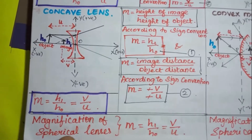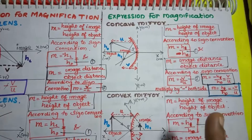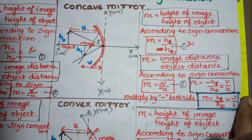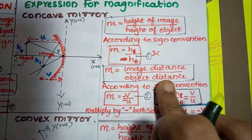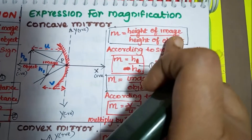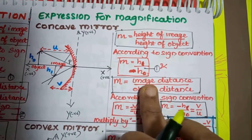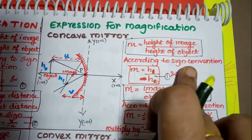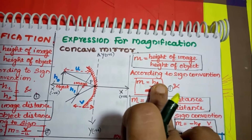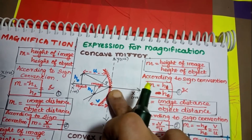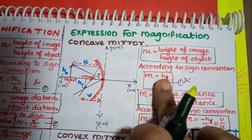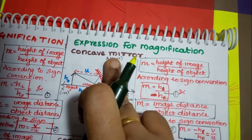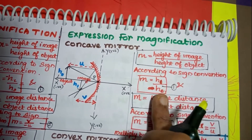Now let's look at the expression for magnification of a concave mirror. This is the ray diagram for magnification of a concave mirror. We have both formulas: magnification equals height of image over height of object, and also image distance over object distance. According to the new Cartesian sign convention, the height of the image lies on the negative side of the y-axis, so M = −H1 / H0. The height of the object lies on the positive side of the y-axis.